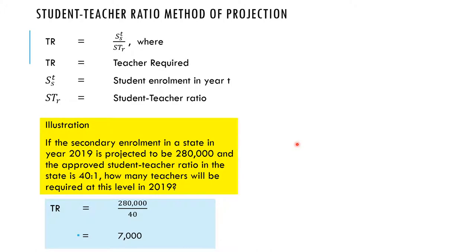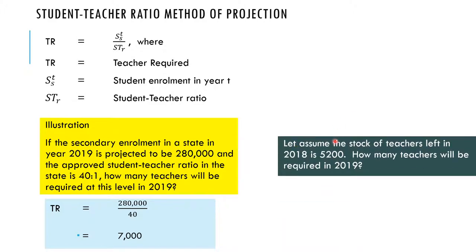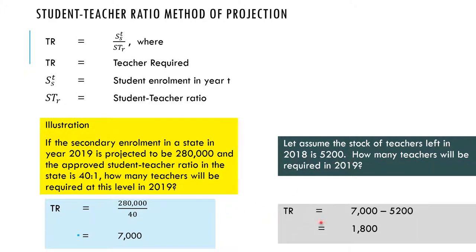However, before 2019 there would have been some teachers already on ground. Assuming the stock of teachers remaining in 2018 is 5,200, how many teachers will be required in 2019? You subtract the existing number of teachers from the required number: 7,000 minus 5,200 gives us 1,800. This means we need a total of 1,800 additional teachers. Adding 1,800 to 5,200 gives us the 7,000 required.